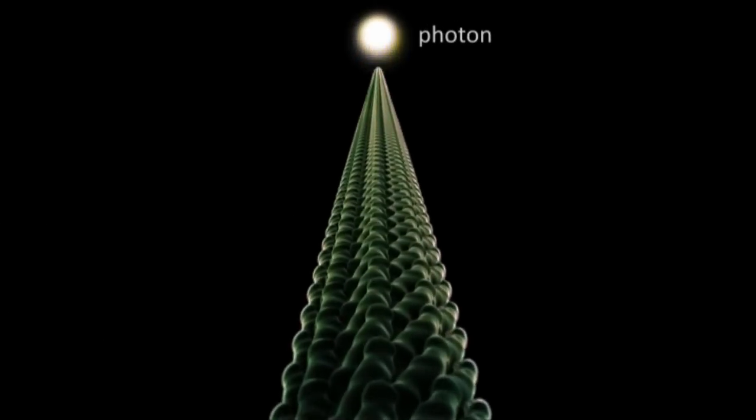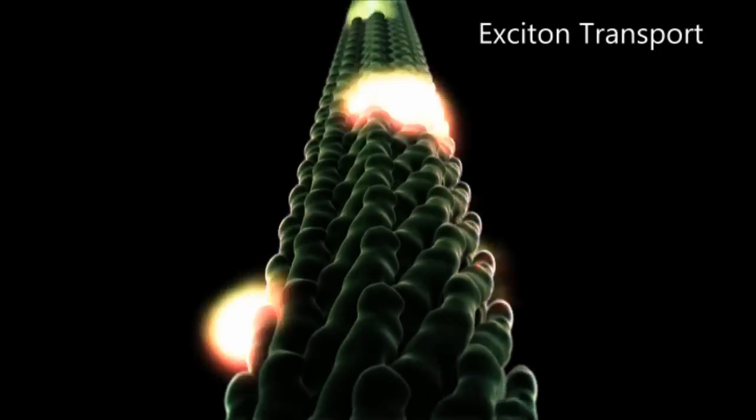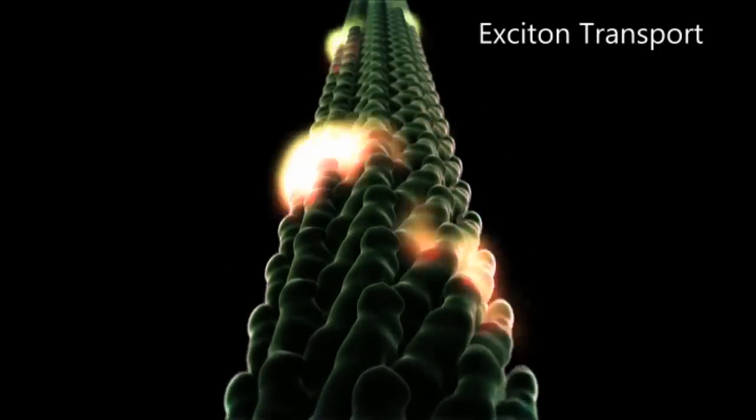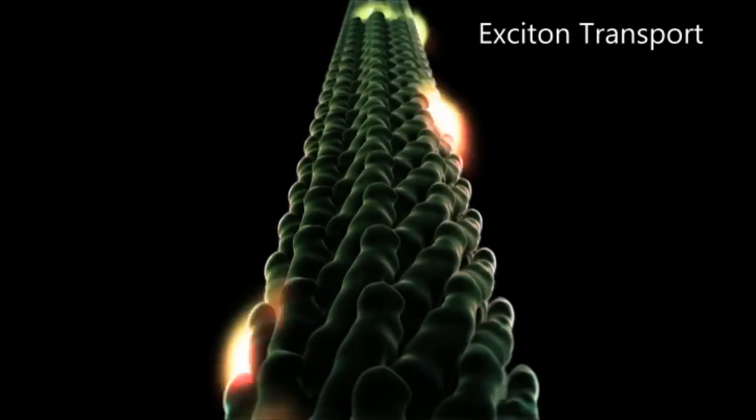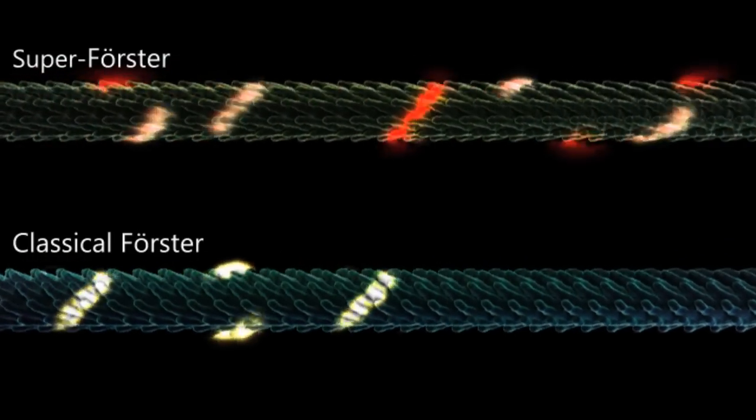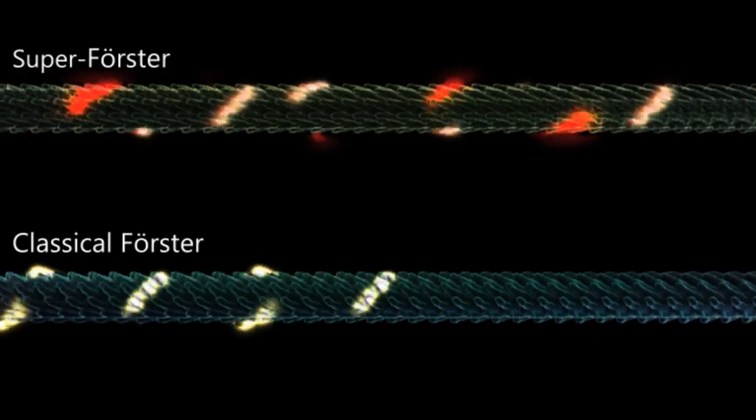Ultimately, what happens is that a photon strikes the surface of a virus, an exciton is created, and is transported down the length of the virus. In the case of the quantum virus, or superforester virus, that exciton travels 68 percent farther with greater than two times faster transport kinetics.